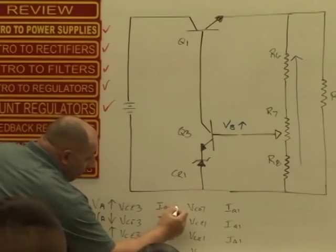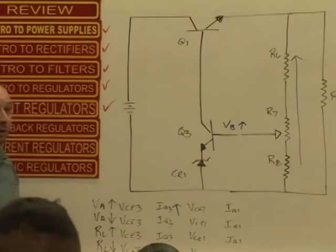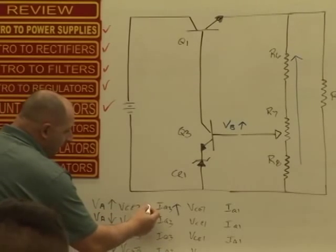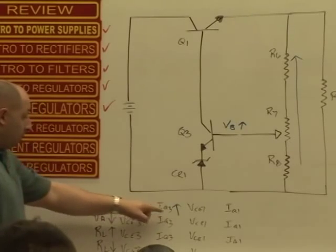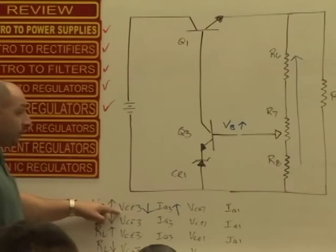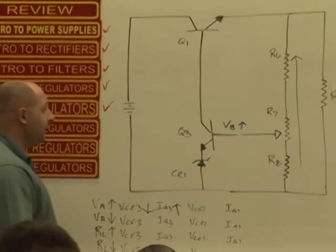So right now, go here, increase conduction in Q3. Naturally, the VCE is going to decrease. Decrease, because load line, current of the transistor conduction and VCE are inverse. I've said that a bunch of times.